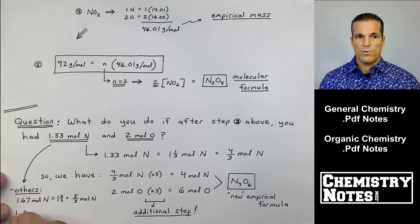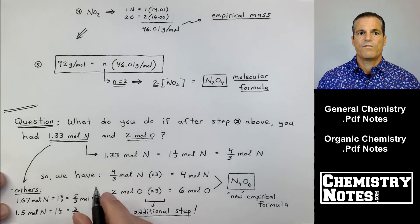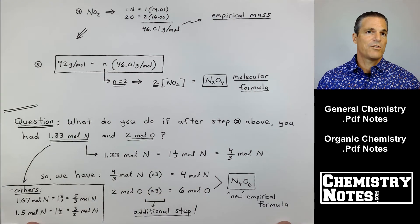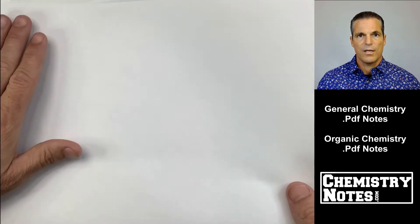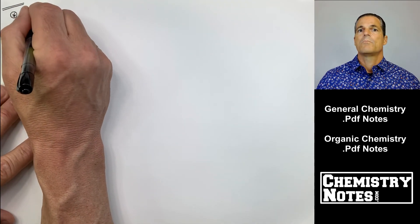five over three moles of N. If it were a 1.5, I'm down in the bottom left corner of your notes, I'd have to multiply by a two to get the three halves equaling three. That just takes practice, but you need to get the numbers clean before you can really have your empirical formula finished.